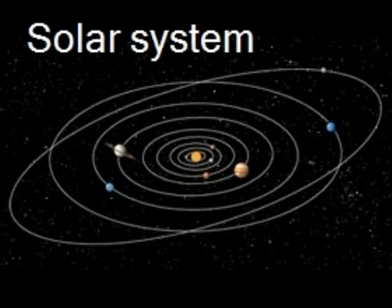The early Greek astronomers thought that the planets moved in circular orbits about an unmoving Earth, since the circle is the simplest mathematical curve. In the 17th century, Johannes Kepler eventually discovered that each planet travels around the Sun in an elliptical orbit with the Sun at one of its foci.